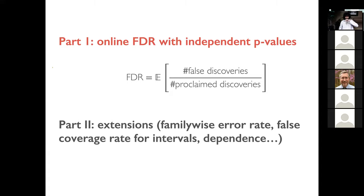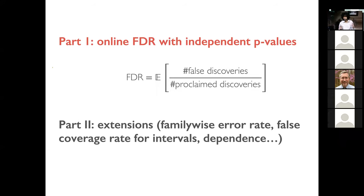Let me get started with online FDR control. Hopefully everyone knows what the false discovery rate is. There's a question in chat: are all experiments accessing the same hypothesis or treatment effect? No — I'm thinking these experiments are all for different things. In A/B tests, imagine different products for which tests are being run. When looking at treatments, it's different drugs. Different parameters that you're interested in.